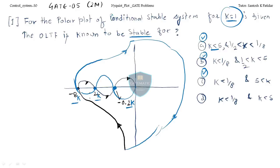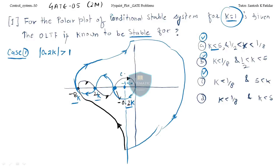Now you can check very easily. Suppose your point is at minus 1 plus j0. You draw a line to that point and first find out the direction. If the plot is at a certain position, when will minus 1 plus j0 be inside? When your minus 0.2k point — for case 1, the magnitude condition is that this should be greater than 1, so it will be inside.